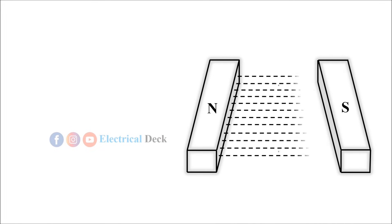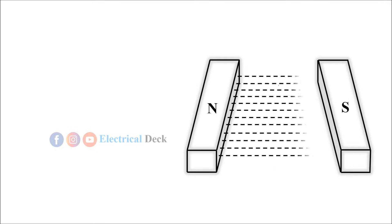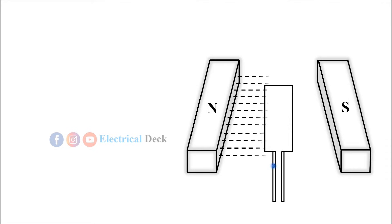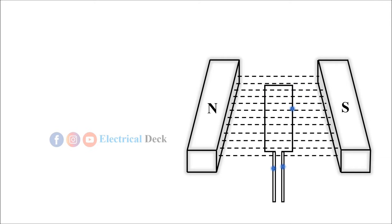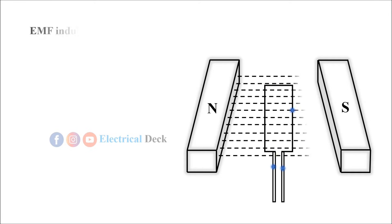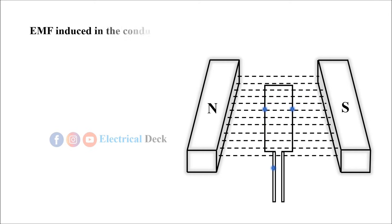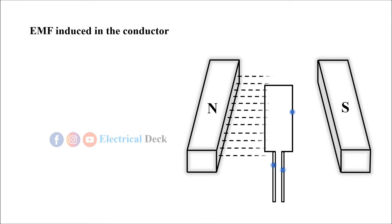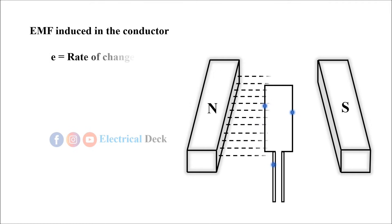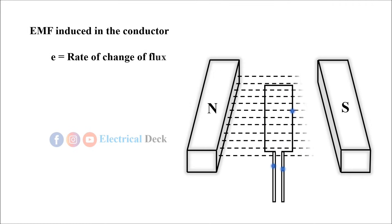When the conductor is rotating in the magnetic field, EMF gets induced in the conductor. The amount of EMF induced in the conductor is given by e = rate of change of flux, that is, dφ/dt.